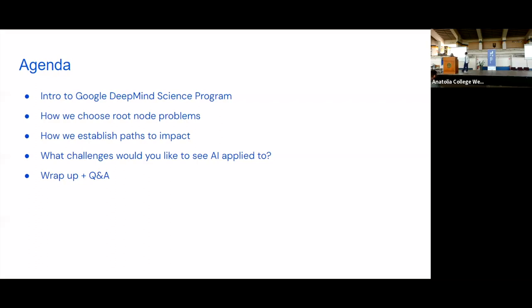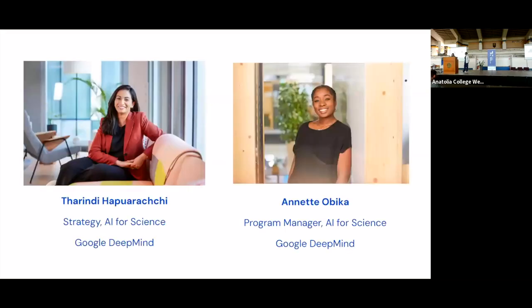A quick look at the agenda today. We'll spend a few minutes giving an introduction to the Google DeepMind science program and that will talk a little bit about how we go about choosing scientific problems to work on, what we call root node problems. I'll then talk about how we establish paths to impact, or how we leverage those foundational scientific problems and solutions to then have impact across many different fields and industries. We'll then come back to that question of what challenges you would like to see AI applied to, and then we'll wrap up and have plenty of time for Q&A. I know we're at the end of the day. Congrats for making it this far. We'll make sure that we wrap up on time and maybe a little bit early as well.